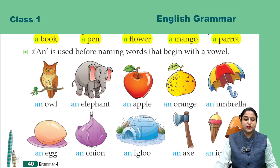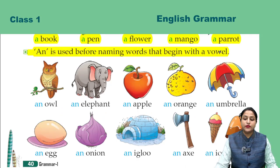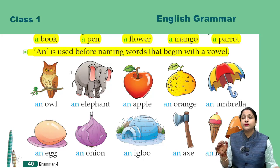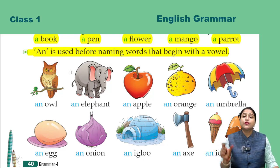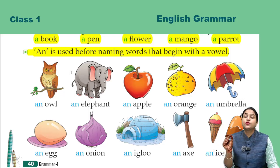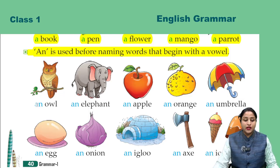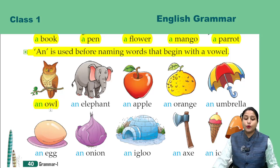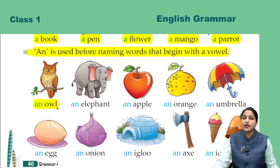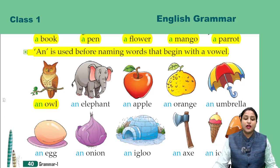Ab next dekhte hain. N is used before naming words that begin with a vowel. AN hum un naming words se pehle lagate hain jo vowel se start hoti hain — jo A, E, I, O, U se start hoti hain. Ab yahaan par dekhiye: an owl. Owl kis se start hua hai? O se, aur O kya hai? Ek vowel hai. To owl se pehle hamne kya lagaya hai? N — an owl.